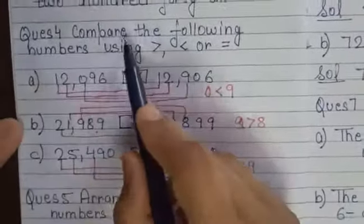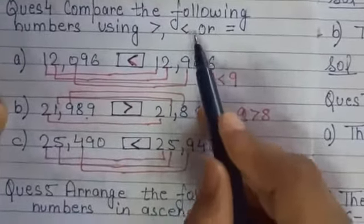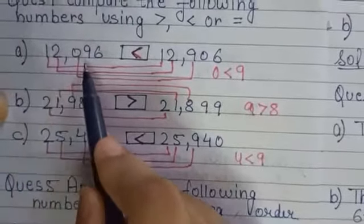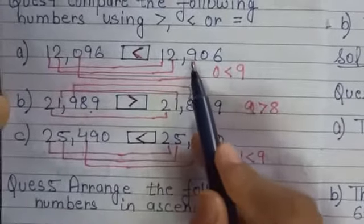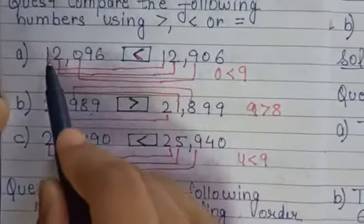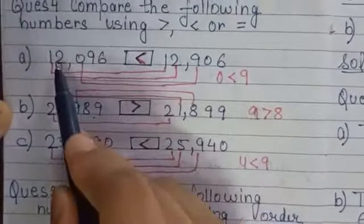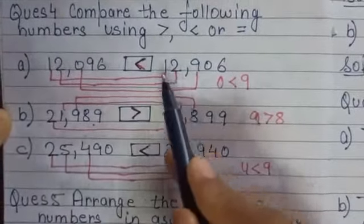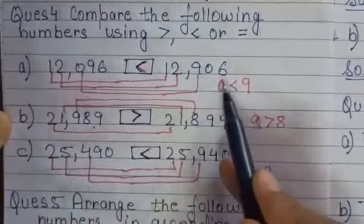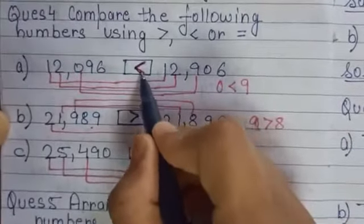Question 4: compare the following numbers using greater than, smaller than, or equal to. Part A: 12,096 and 12,906. Comparing digit by digit — 1 and 1 are the same, 2 and 2 are the same, but the next digits are 0 and 9 — since 9 is greater than 0, the greater-than sign goes on the right side.